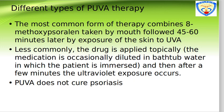There are different types of PUVA therapy. The most common form combines 8-methoxypsoralen taken orally, followed 45–60 minutes later by exposure of the skin to UVA. Less commonly, the drug is applied topically. Occasionally, the medication is diluted in bathtub water in which the patient is immersed, and then after a few minutes, the ultraviolet exposure occurs.